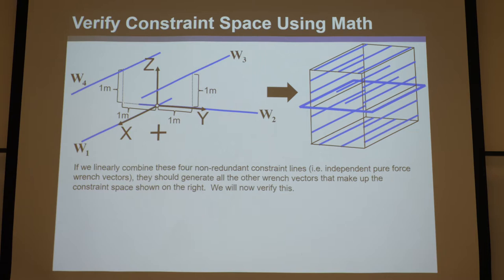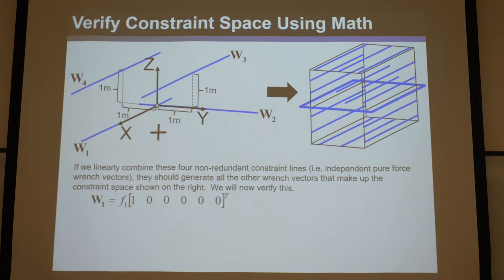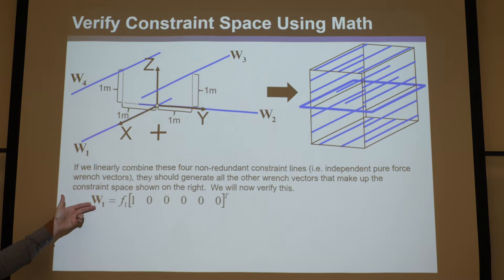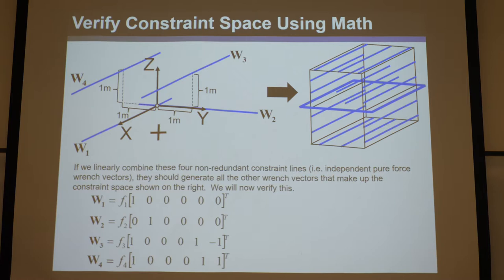Let's find a math approach. The first thing we do is define the wrench vectors — you find the F vectors of all these, make the first three, then take the R vectors, the location vectors pointing to all of them, cross those with F vectors for the last three. You'd add those to Q times F, but Q is zero here. You use this equation to find the first three and bottom three. Here's omega one, omega two, omega three, omega four — check my math at home.